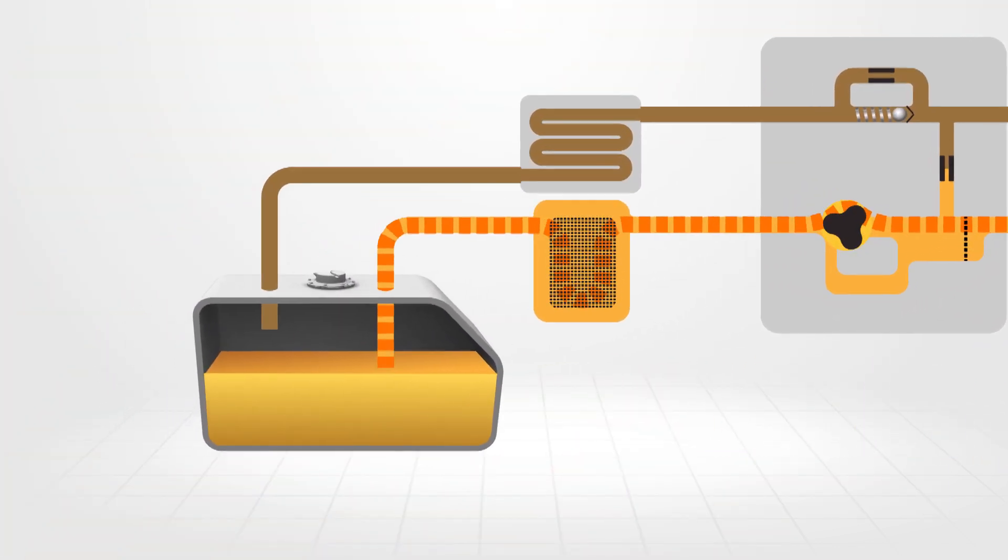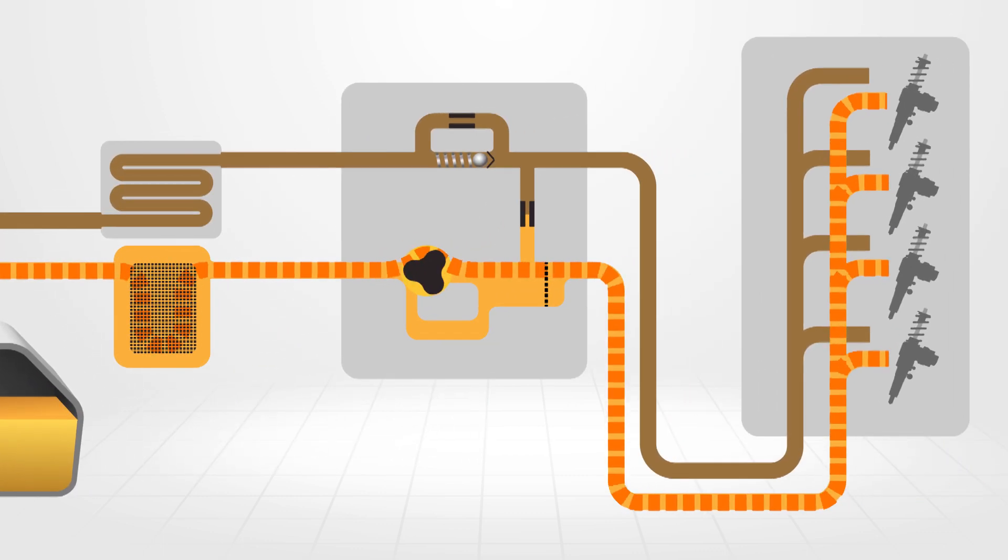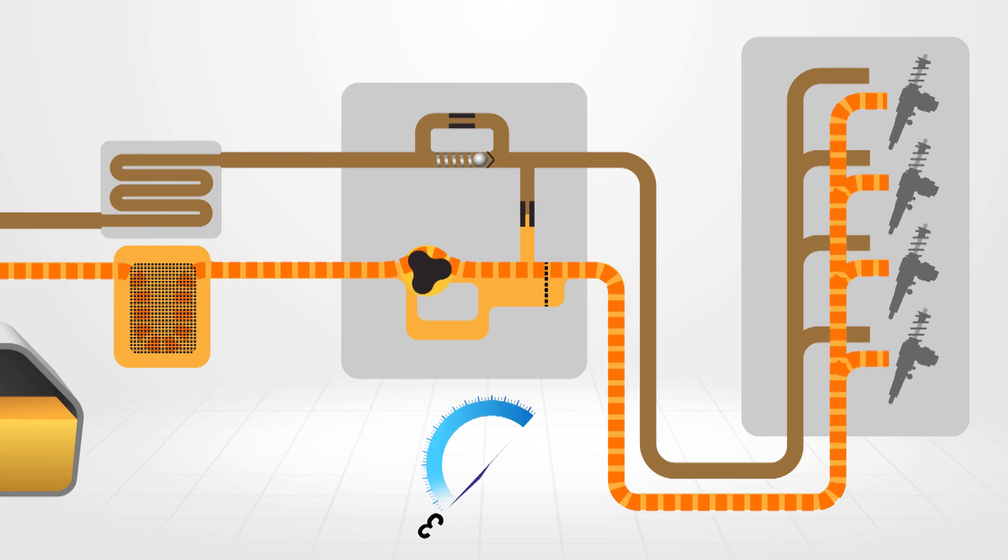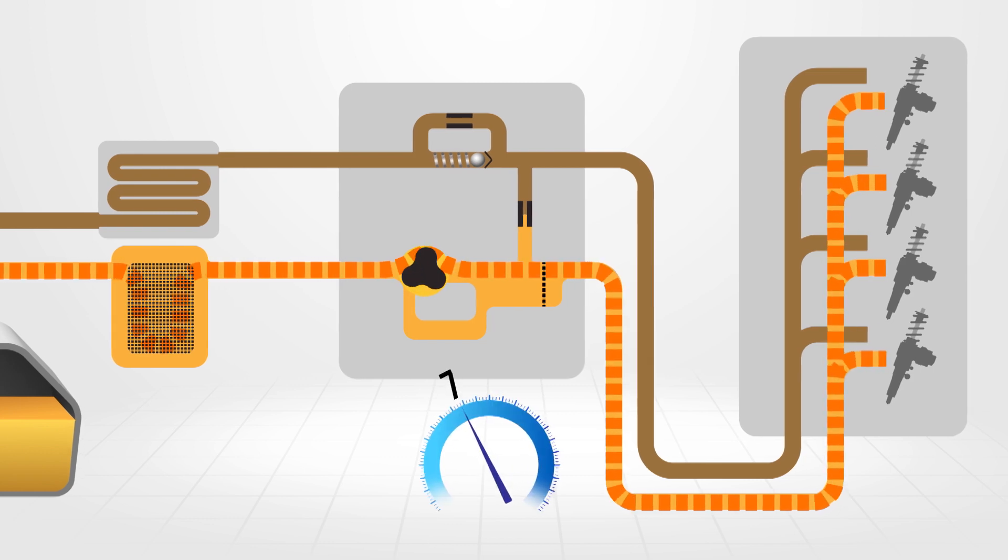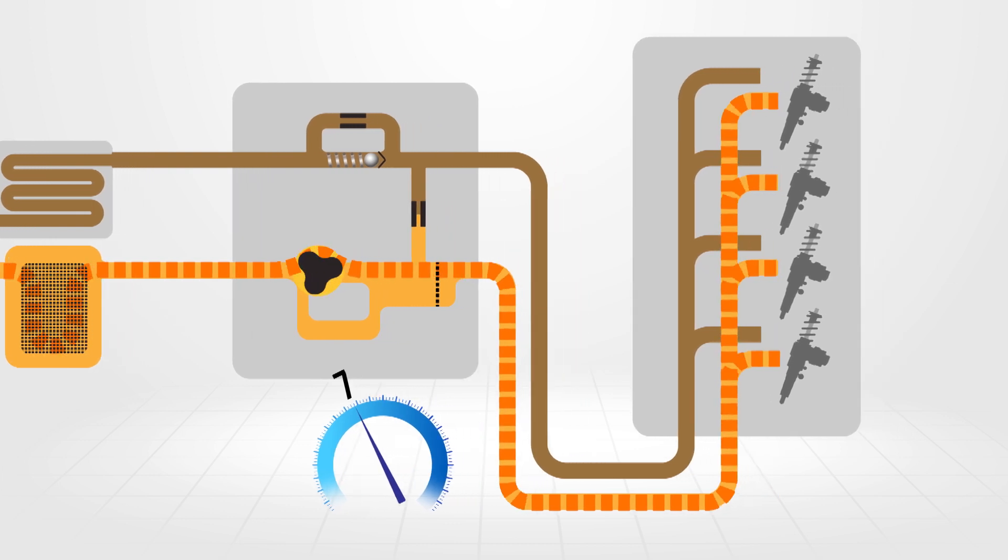Diesel fuel is drawn from the fuel tank by a camshaft driven mechanical pump attached to the end of the cylinder head. Fuel pressure is raised to about 7 bar and then transferred to the unit injector through a cylinder head gallery.